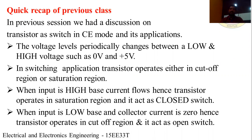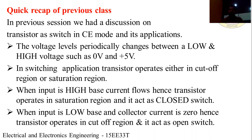Before going to today's session, let me have a quick recap of the previous session. In the previous session, we had a discussion on the transistor which acts as a switch in CE mode, that is common emitter mode, and also we discussed its applications. The transistor is a three-terminal device having base, emitter, and collector regions, which is used for amplification and switching purposes. Amplification means strengthening a weak signal into a strong signal — either a current signal or a voltage signal. In switching applications, the transistor operates either in the saturation region or in the cutoff region — either as an open switch or a closed switch.